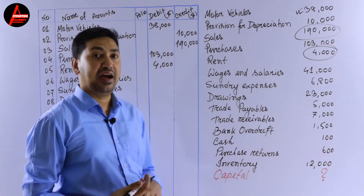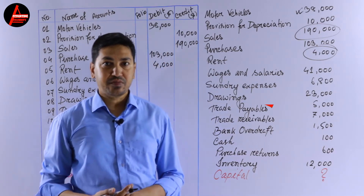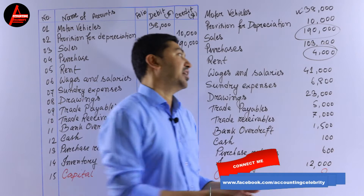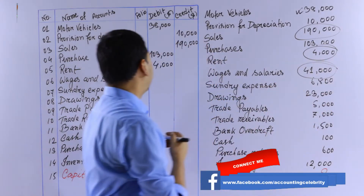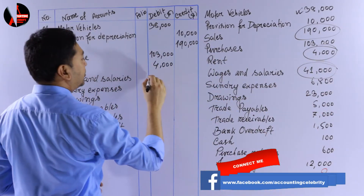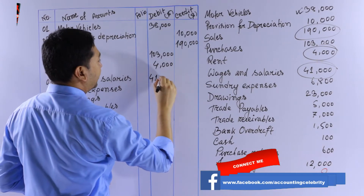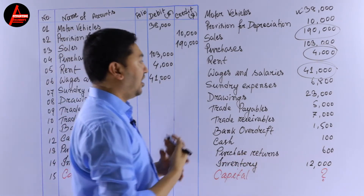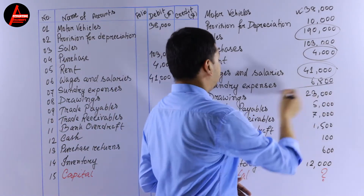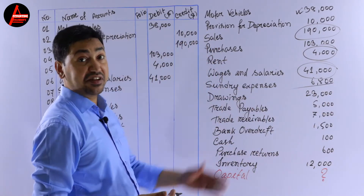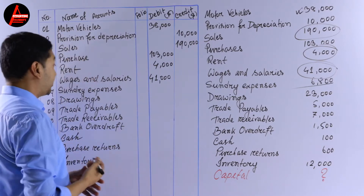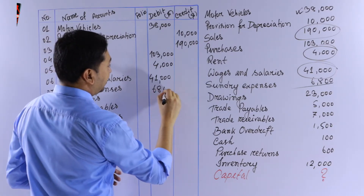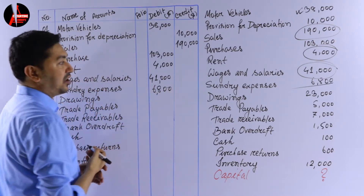Next we have wages. Wages and salaries are an expense for the business, and expenses come on the debit side — 41,000 dollars. Then we have sundry expenses, which are also expenses, so they come on the debit side: 6,800 dollars.